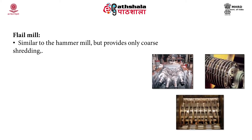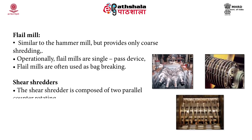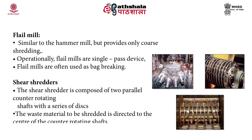A flail mill is almost similar to a hammer mill but provides coarse shredding. Operationally, flail mills are single pass devices mostly used for bag breaking. A shear shredder is composed of two parallel counter-rotating shafts with a series of discs. The waste material is directed to the center of the counter-rotating shafts and the mechanism used is shearing or tearing.